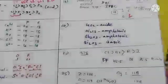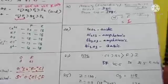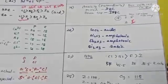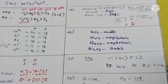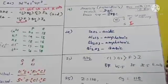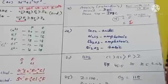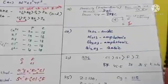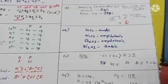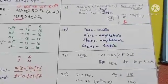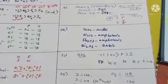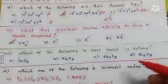Selenium oxide is acidic, aluminium oxide is amphoteric, antimony oxide is also amphoteric, and bismuth oxide is basic in nature. Therefore, the most basic oxide among these four is bismuth trioxide (Bi₂O₃).